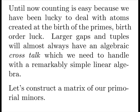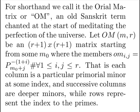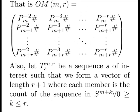Let's construct a matrix of our primordials. For shorthand, we call it the Oriel matrix, or OM, an old Sanskrit term chanted at the start of meditating of perfection of the universe. Let OM of MR be an R plus 1 by R plus 1 matrix. Starting from some M0, where the members OM of IJ are various primordial minors and offsets. That is, each column is a particular primordial minor at some index, and successive columns are deeper primordial minors, with rows representing increasing indexes.